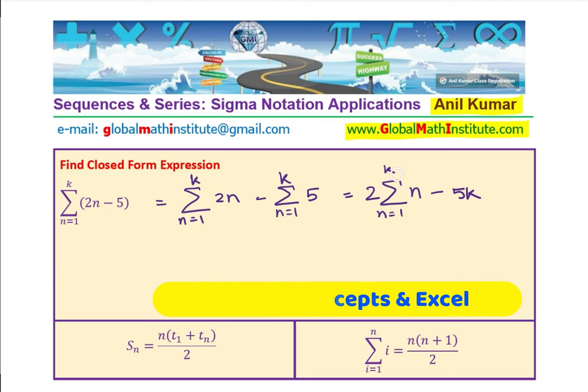And now sum of n from 1 to k really means that should be equal to 2 times sum of natural numbers from 1 (if n is 1, then 2, 3 till k) and then we have k 5s, right, which is minus 5k.